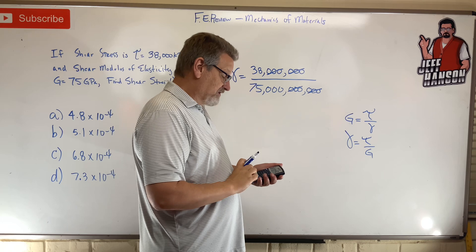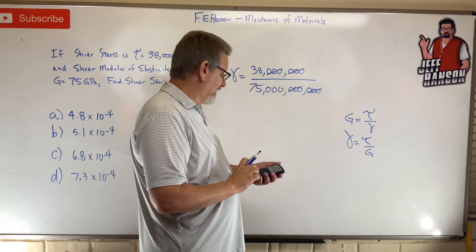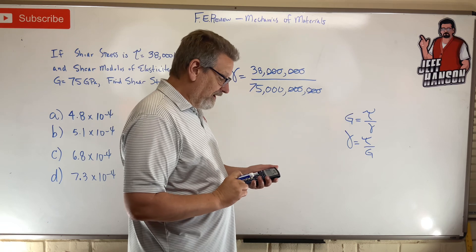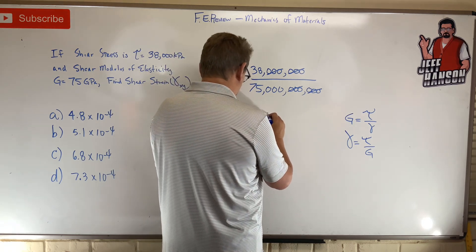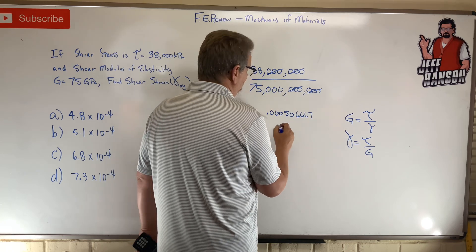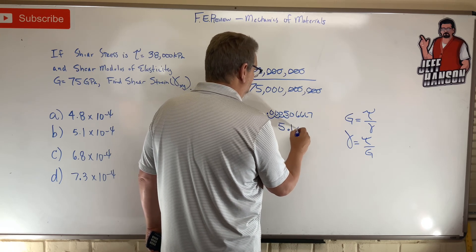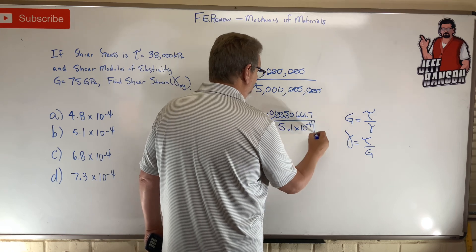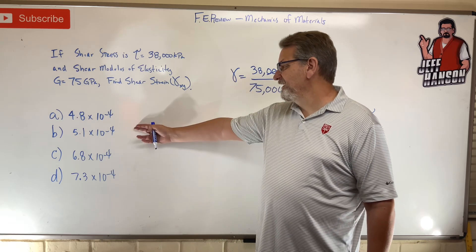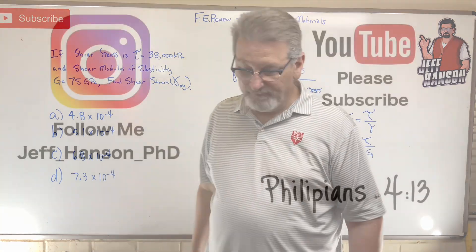Now it's pascals over pascals, so the units cancel. You can cross off the zeros: 38 divided by 75 gives 0.000506667, which is approximately 5.07 times 10 to the minus 4. That's the answer — choice B.